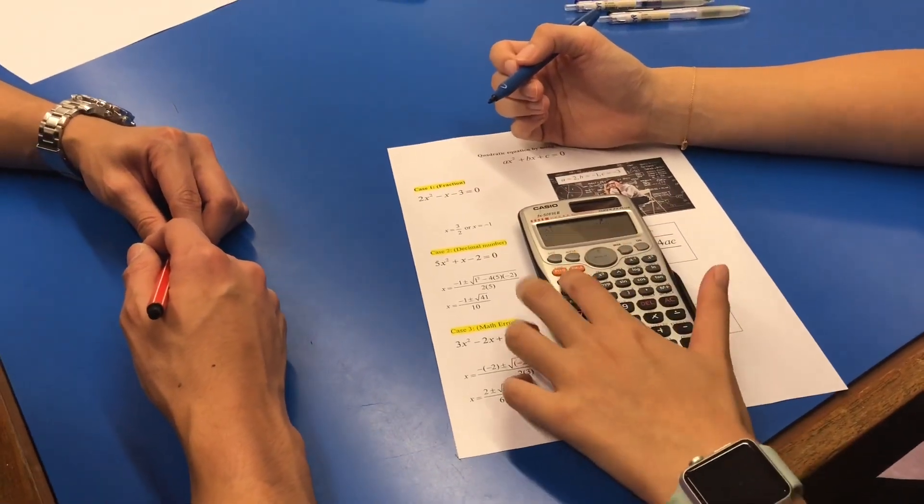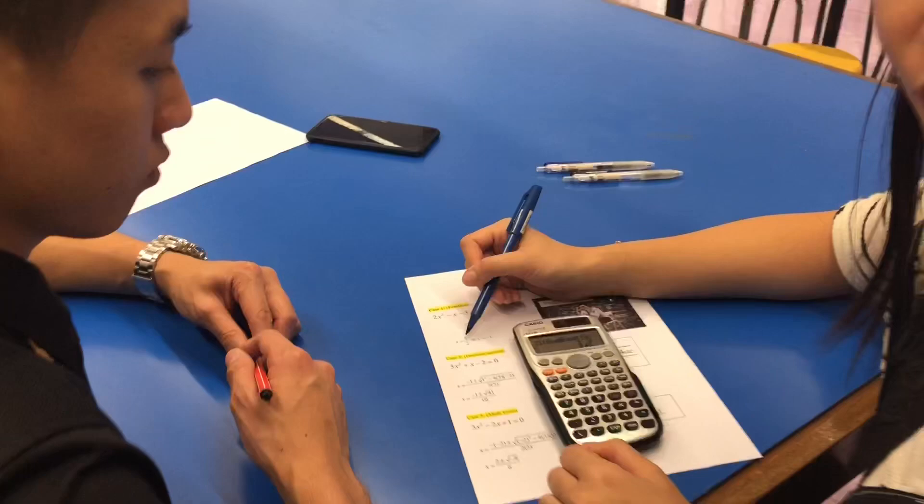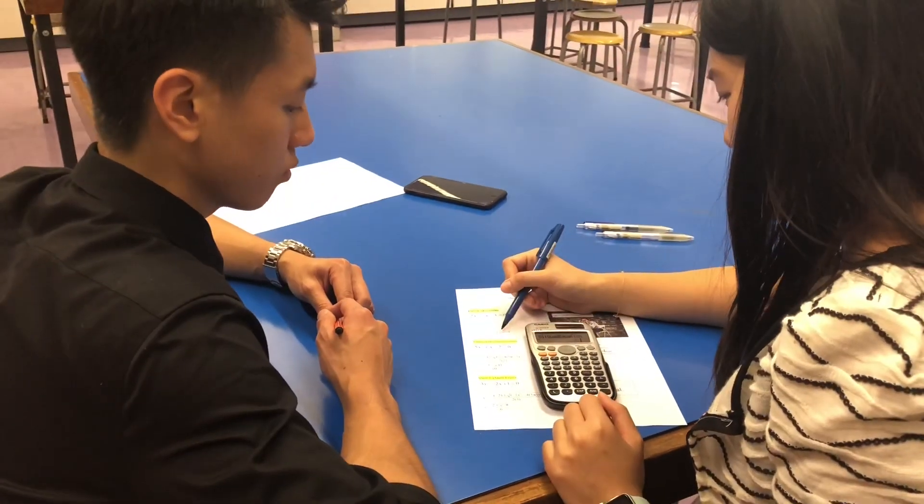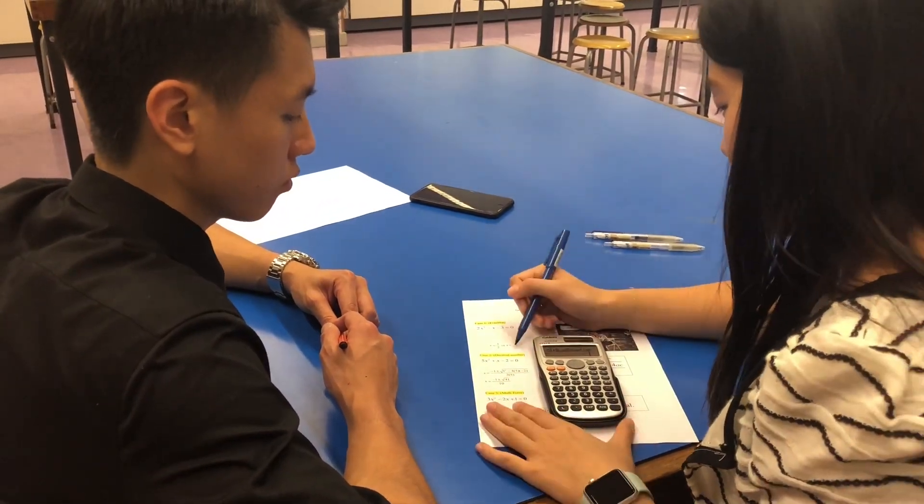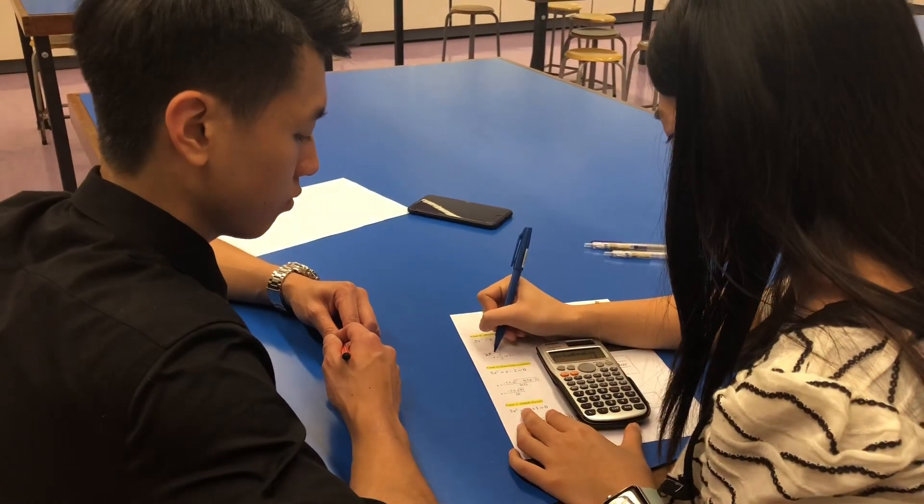Then you can work backward to solve the equation: x plus 1 equals 0. Then you do the backward: 2x minus 3.